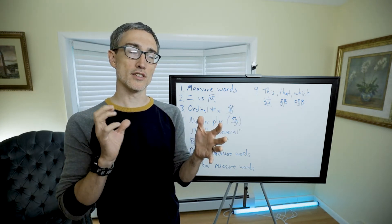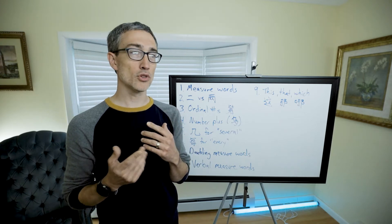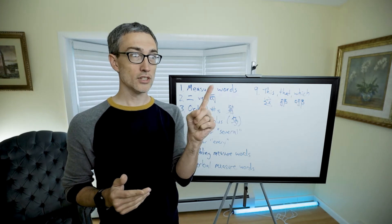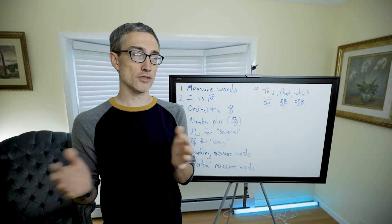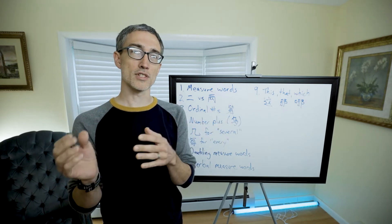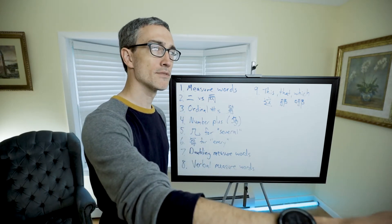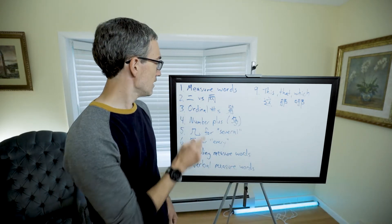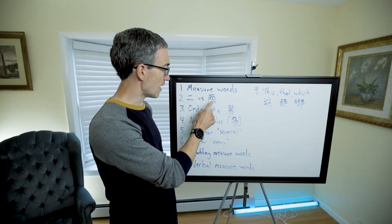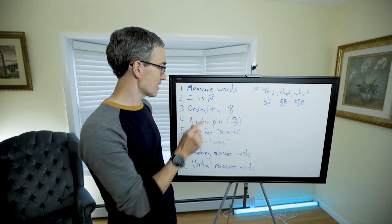One noun can have different measure words. We can have a bowl of noodles, one noodle, a plate of noodles, a pot of noodles. Different measure words can attach to one noun to measure it in different ways. That was a little overview of measure words.